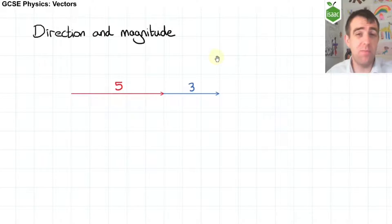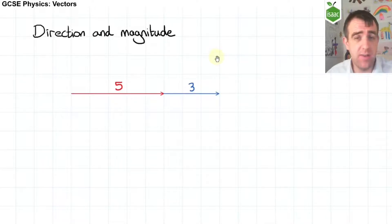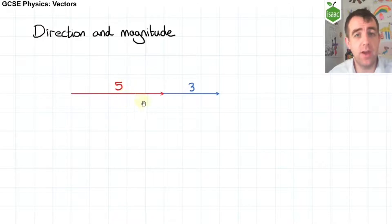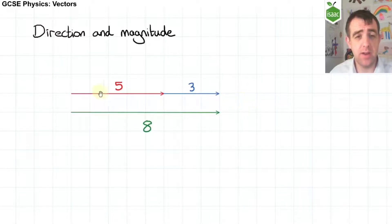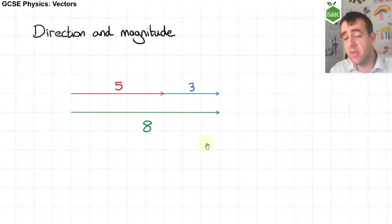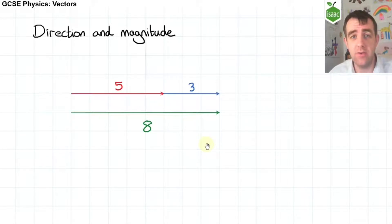Now believe it or not, you've been adding and subtracting vectors for years since you were in primary school. A vector of 5 to the right, plus a vector of 3 to the right, is a vector of 8 to the right. This is usually how you learn to add up using a number line. So 5 plus 3 is 8, and you can see clearly that those are the same length and in the same direction.